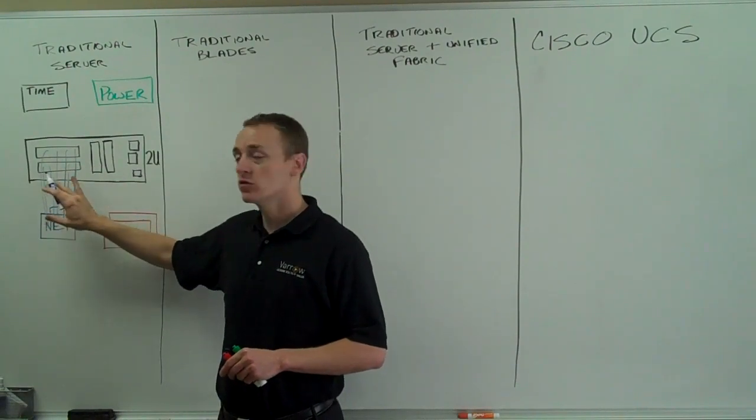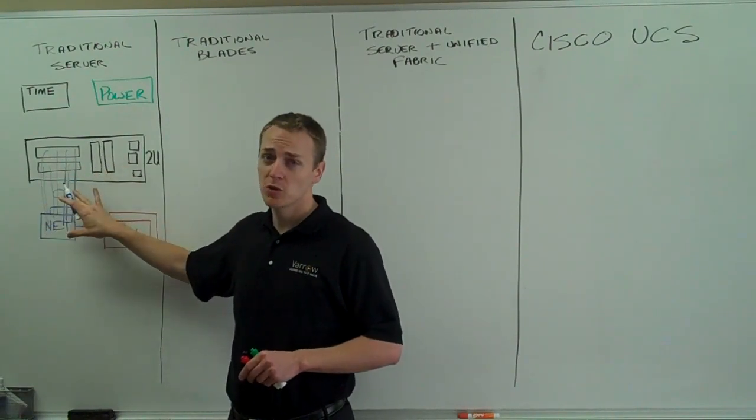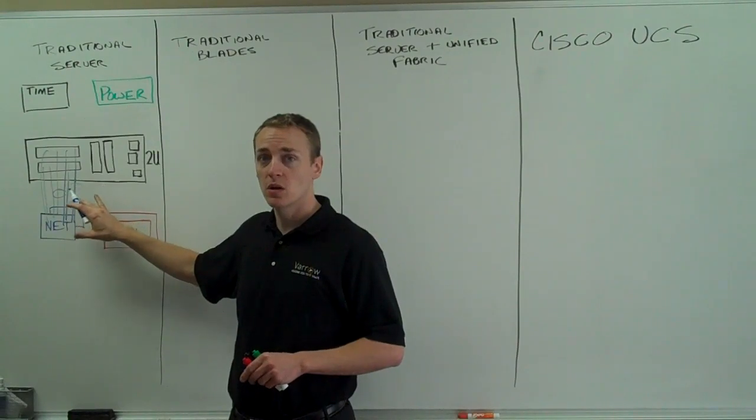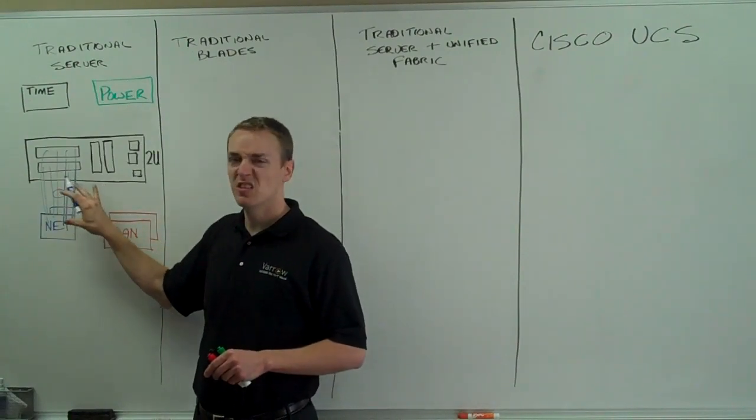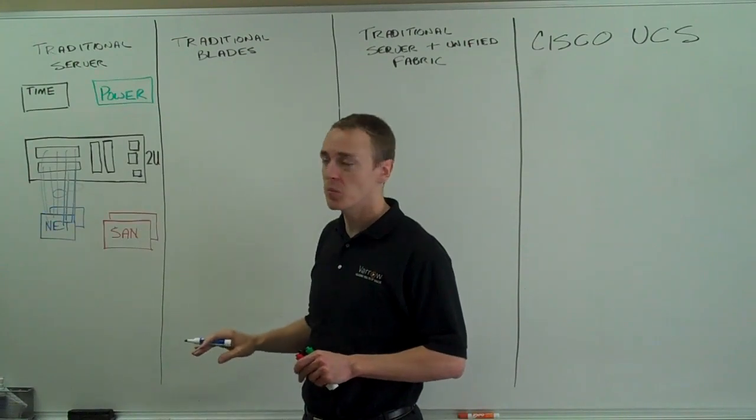So I want all eight network cards - two for service console, two for vMotion fault tolerance, and four for virtual machine traffic. And this could be configured in different ways, but this is a good standard number.